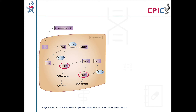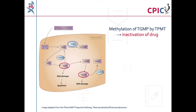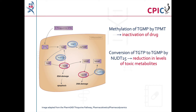These active thioguanine nucleotide metabolites are cytotoxic. The TPMT protein encoded by the TPMT gene inactivates TGMP, a metabolite of thioguanine, by methylation. This reduces the number of TGMP molecules available for conversion to active thioguanine nucleotide metabolites. The NUDT15 protein encoded by the NUDT15 gene converts active thioguanine nucleotide metabolites to inactive thioguanine nucleotide metabolites, reducing the level of cytotoxic active thioguanine nucleotide metabolites present in the body.